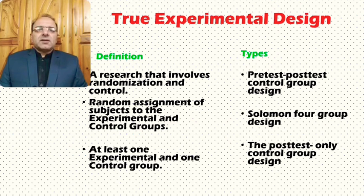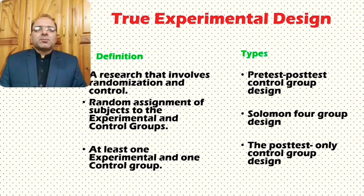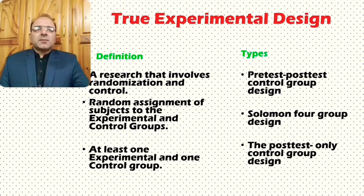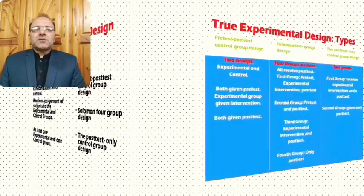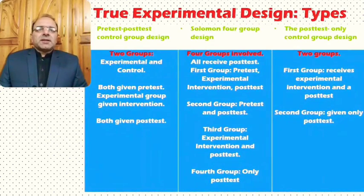The true experimental research design has three prominent sub-types: the pre-test post-test control group design, the Solomon four group design, and the post-test only control group design. We will briefly discuss what these three types are, how they differ, and what processes are involved.